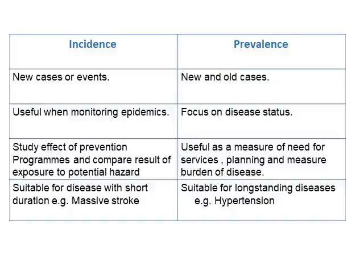Incidence is most suitable for diseases with short duration — for example, a massive stroke event that leads to rapid death. In that case, prevalence wouldn't apply since those cases won't persist; death is itself an incident event. For short-duration outcomes, we study incidence. Prevalence is suitable for long-duration diseases — conditions that persist over long periods, such as hypertension, where old and new cases continuously accumulate.